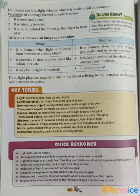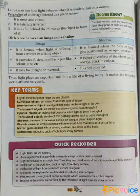Now let us see how light behaves when it falls on a mirror. Properties of an image formed in a plain mirror: first, it is erect and virtual; second, it is laterally inverted; third, it is as far behind the mirror as the object is in front of it.